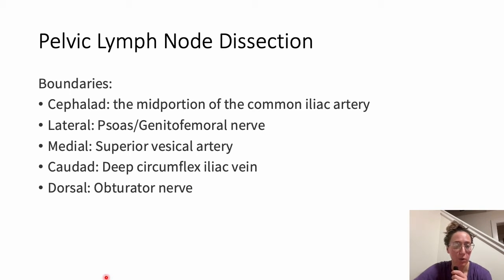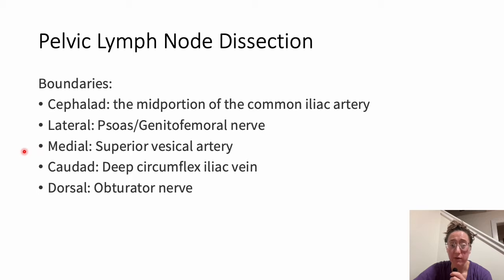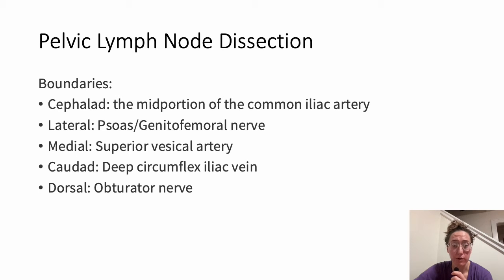Let's start with our pelvic lymph node dissection and go through the borders. The cephalad border is the mid-portion of the common iliac artery. Laterally, it's the psoas or the genitofemoral nerve. Medially, it's the superior vesicle artery — some resources name the ureter as the medial border, but gold standard is superior vesicle artery. The caudad border is the deep circumflex iliac vein, and the dorsal boundary, or floor, is the obturator nerve.